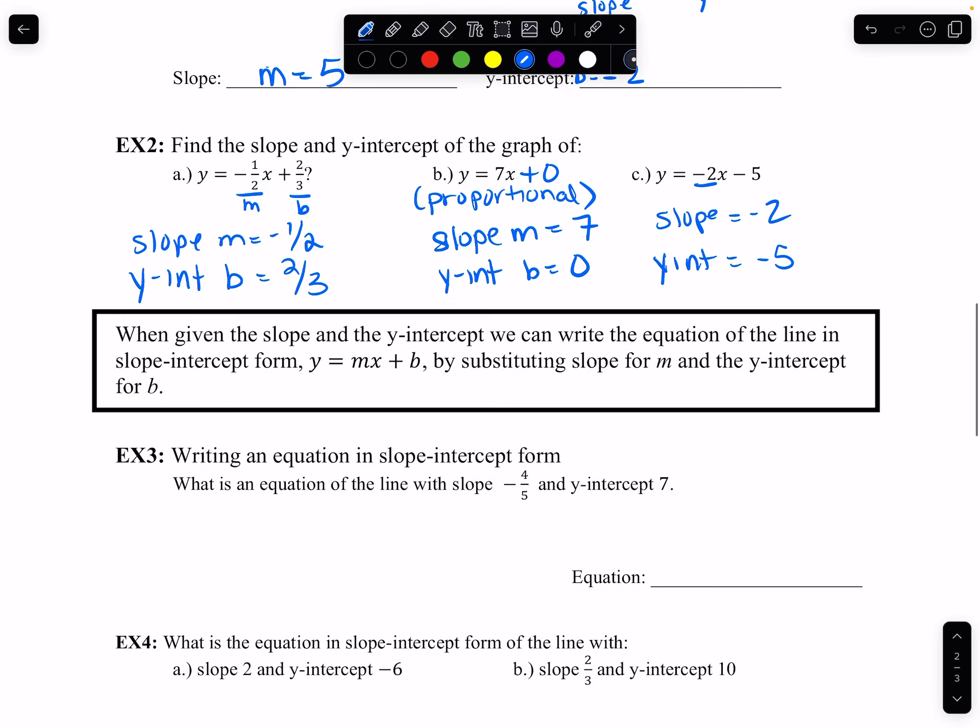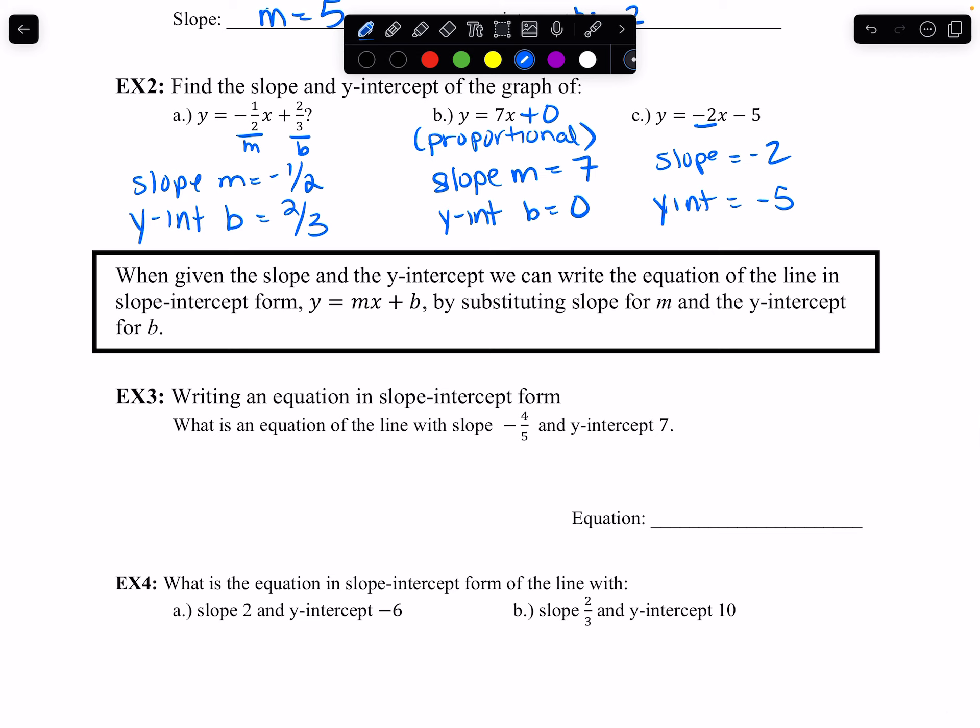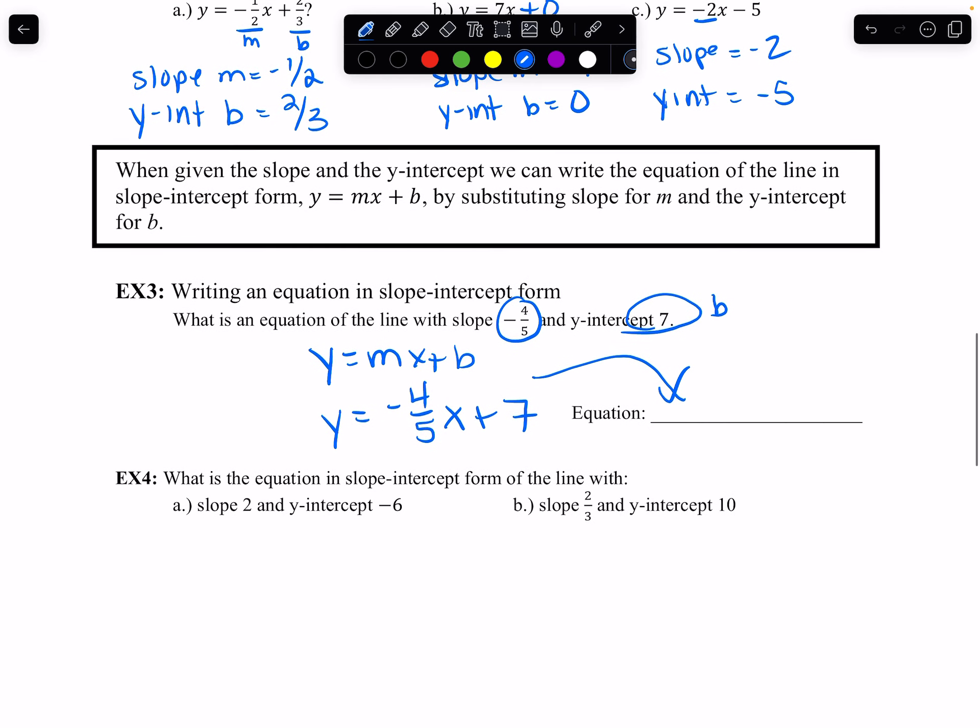Now we're going to take this in reverse. When it gives you the slope and y-intercept, we can write the equation. So y equals mx plus b. The slope is m. So y equals negative four-fifths x plus this is my b, 7. So there's your equation. So to try these out ourselves. This is m, this is b. Y equals mx plus b. M is 2x plus negative 6. And you should write that y equals 2x minus 6.